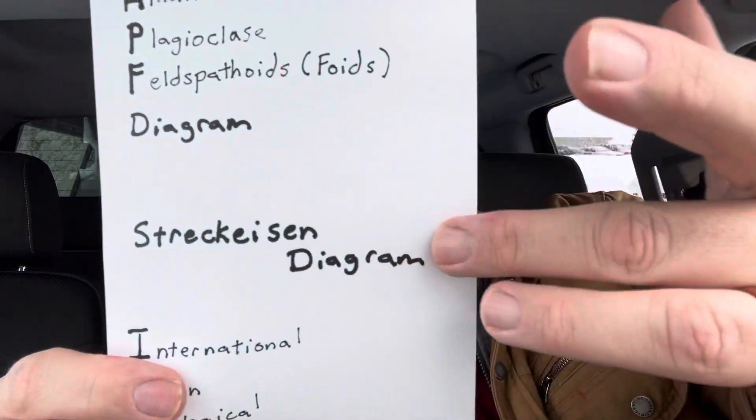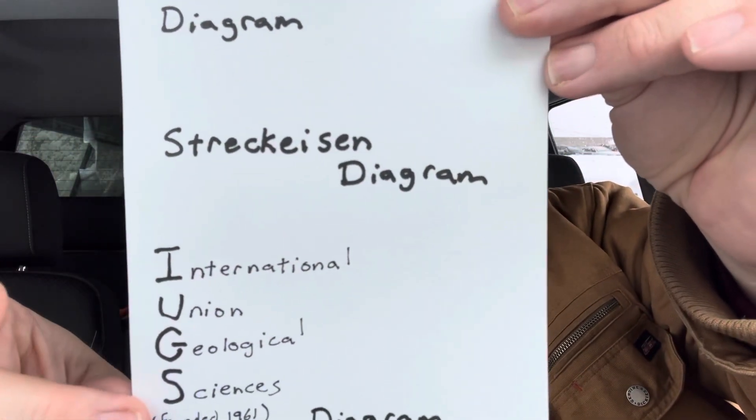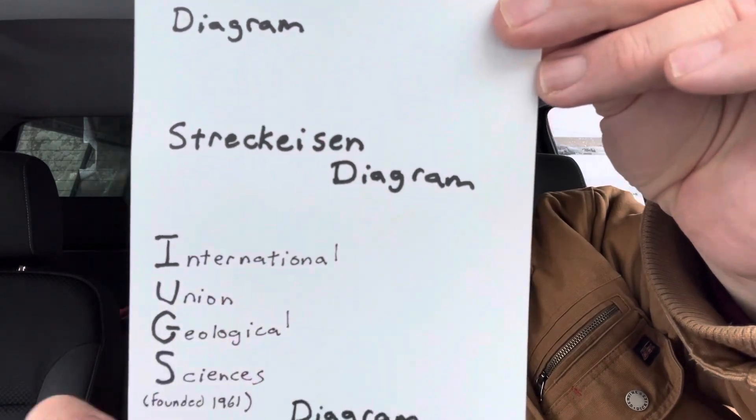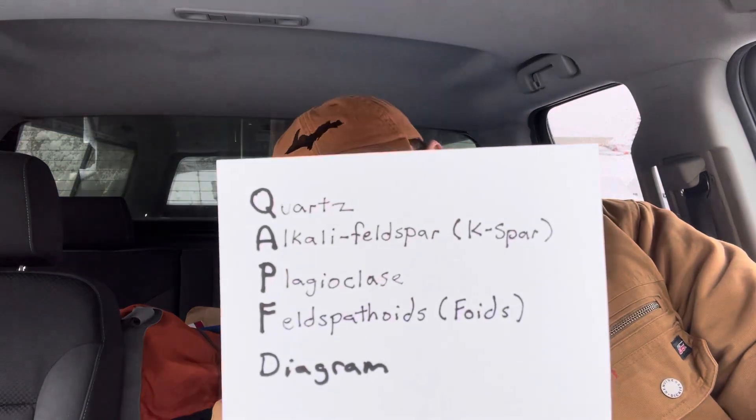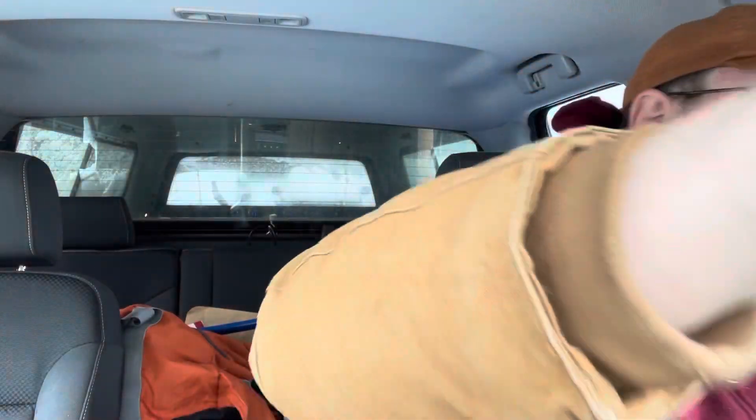Other terms include the Streckeisen diagram or IUGS, which is the body responsible for the plot, founded in 1961. But QAPF is what it physically is, so it's the terminology I tend to use. When you have an igneous rock in hand, visually you're going to want to use a QAPF plot. There are other plots you can use if you have chemical analysis ability, but you're not going to be able to do those by visual methods, at least not reliably. So you use this ternary plot, and there are two.